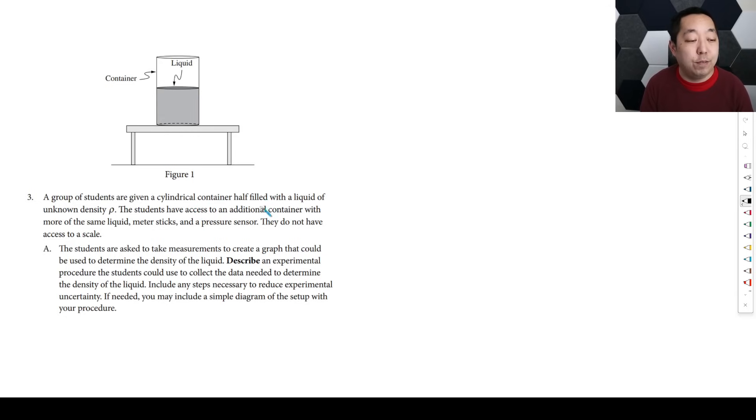So let's take a look at this first question here, this example question from the College Board. So, a group of students given a cylindrical container half filled with a liquid of unknown density ρ, so this is a fluids question. Students have access to an additional container, so they're telling you what you have access to, an additional container with more of the same liquid, meter sticks, and pressure sensor. You don't have a scale. So this is kind of new, they're starting to restrict you on the kinds of things that you have access to, so it's not so open-ended. Students are asked to take measurements to create a graph that could be used to determine the density of the liquid. Describe an experimental procedure the students could use to collect the data needed to determine the density of the liquid. Include any steps necessary to reduce experimental uncertainty.